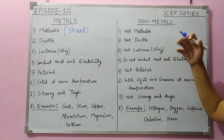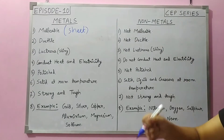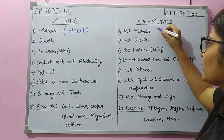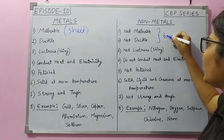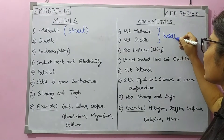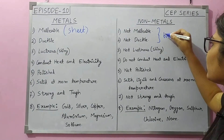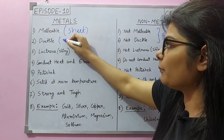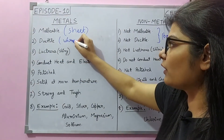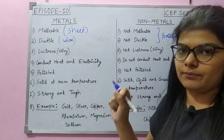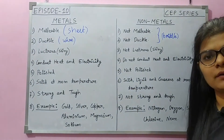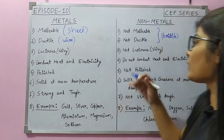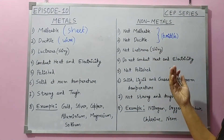Non-metals are brittle. If you hammer a non-metal, it will break. So non-metals are brittle. Metals are also ductile. Ductile means we can create threads and wires from them. That is ductility. You have seen copper wires, gold wires — all these are examples. Non-metals are non-ductile.